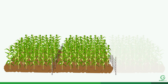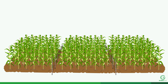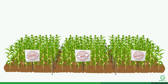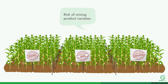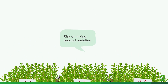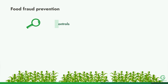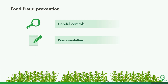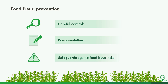If an operation does not grow varieties that are organic, GMO, etc., there may not be a risk of mixing. Careful controls and documentation are important to ensure food fraud does not occur, and operations should have safeguards against any potential food fraud risks.